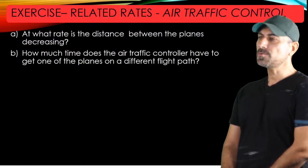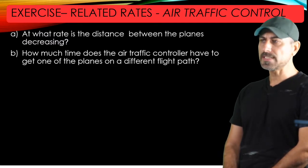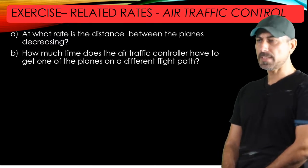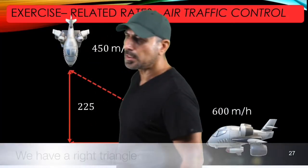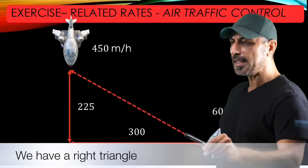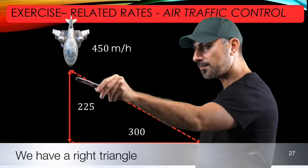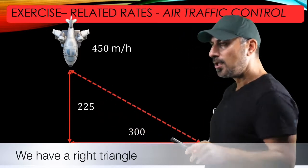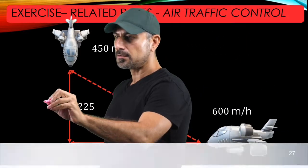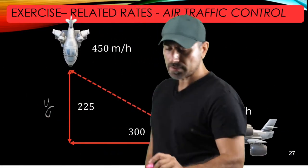The first part of the question is asking at what rate is the distance between the planes decreasing? The distance between two planes is the hypotenuse of this triangle here. So let me call this side to be Y and this side to be X.